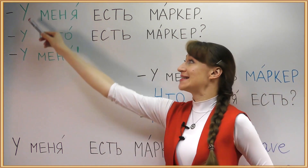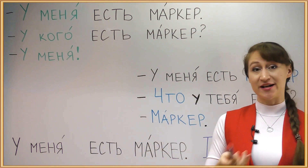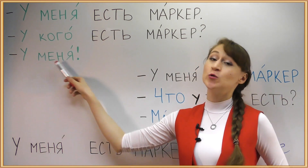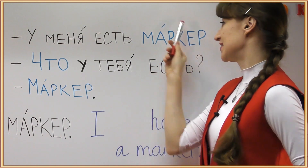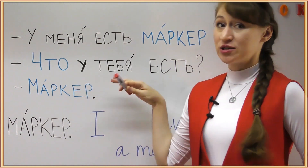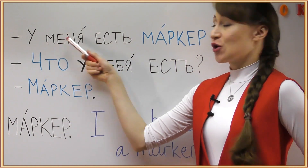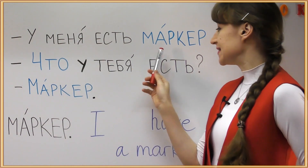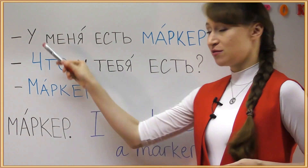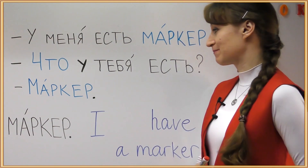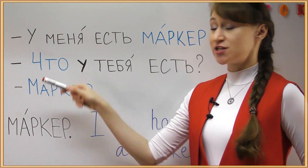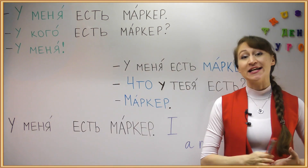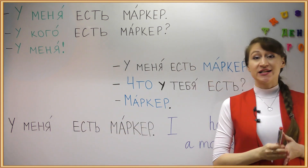Let's review a little. Imagine you didn't hear what was said and you're asking a question to clarify, just like we did last time. For an inanimate noun like MARKER, we ask what exists in your universe. We use the form MARKER and the answer corresponds to the question word. Now before asking CHEGO, let's first construct the statement.